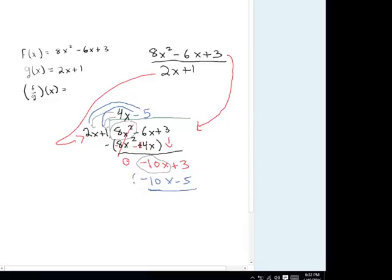So we multiply everything in there times the negative. So we have these 10x's canceling out, because negative 10 plus 10 is equal to 0. And we have 3 plus 5, which is equal to 8.